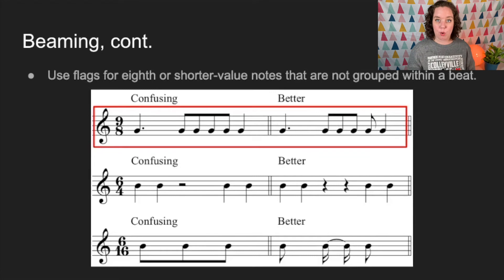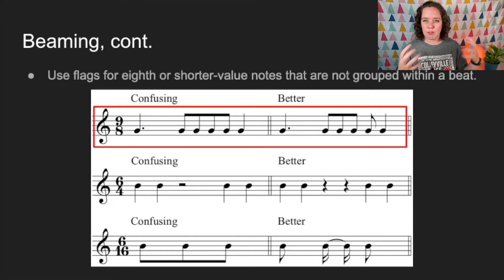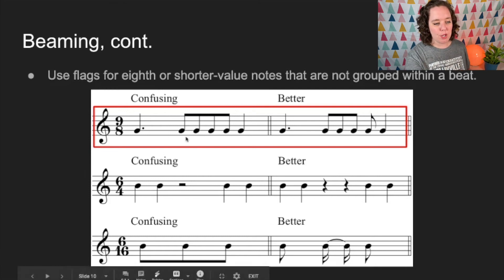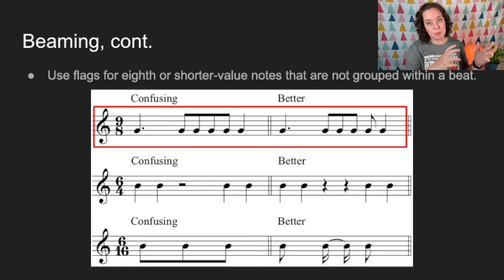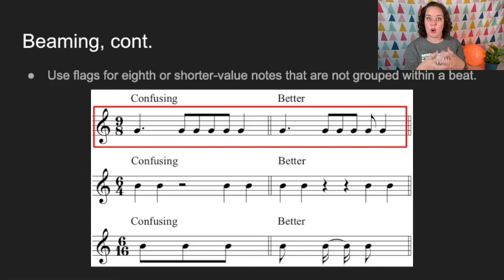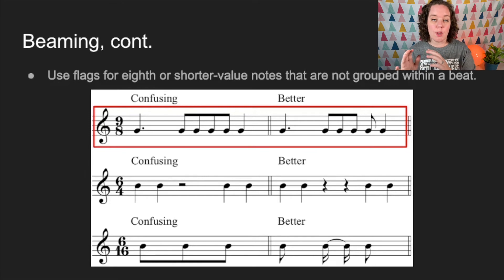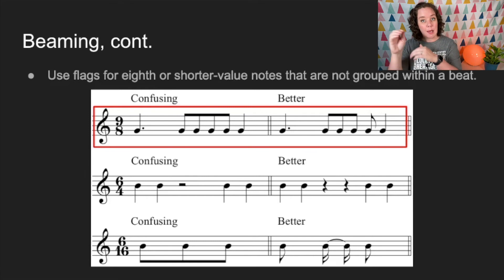Use flags for eighth or shorter value notes that are not grouped within a beat. In the previous example, we had to flag an eighth note that was split off from a grouping of eighth notes to show it belongs to a different group. If you beamed it with those three eighth notes, they'd all appear to belong together. When a note can't be beamed to anything in its group, add the flag.